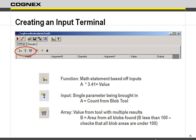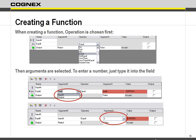Or do you want to bring in a single parameter — like just the count from your blob tool, how many blobs were found? Or do you want an array — maybe all the blobs found so you can look at their areas? So when you're setting it up, here I've brought in a single variable and I'm bringing in an expression.